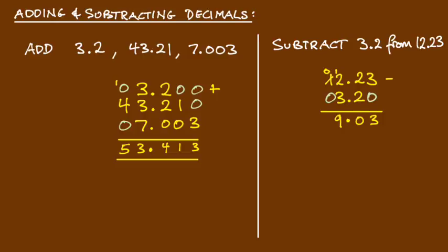0 take 0 gives me 0. So my answer is 9.03. That is how we add and subtract decimals.